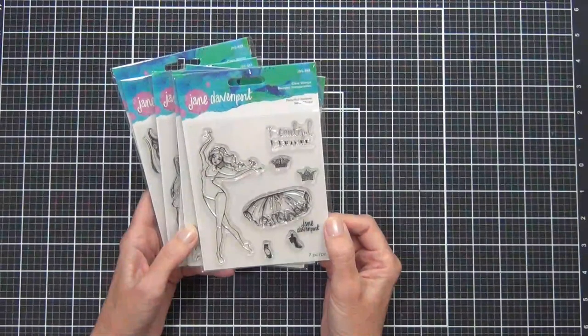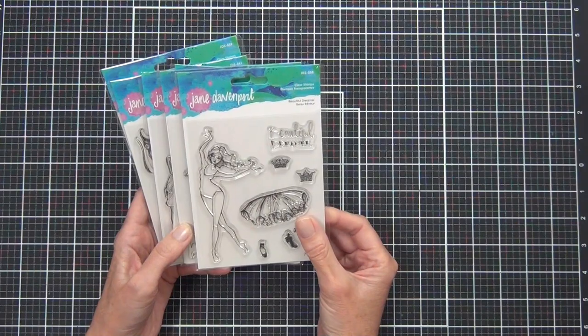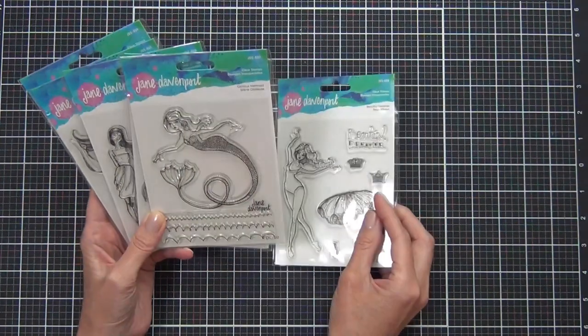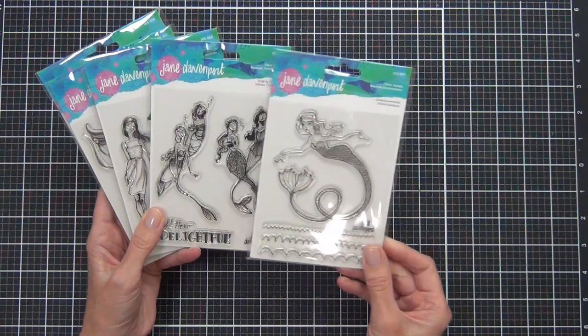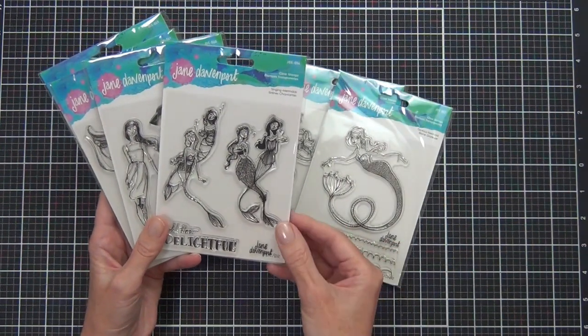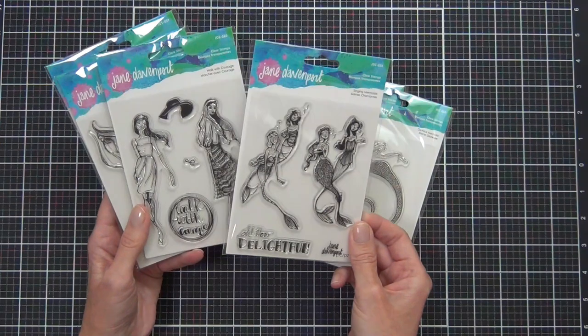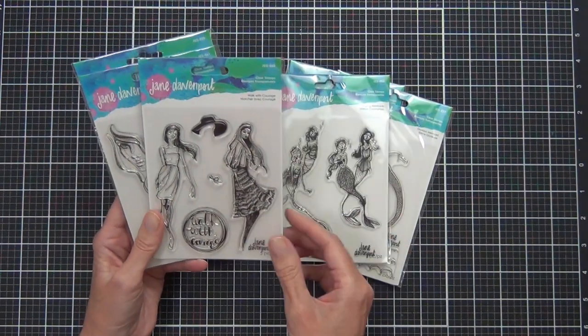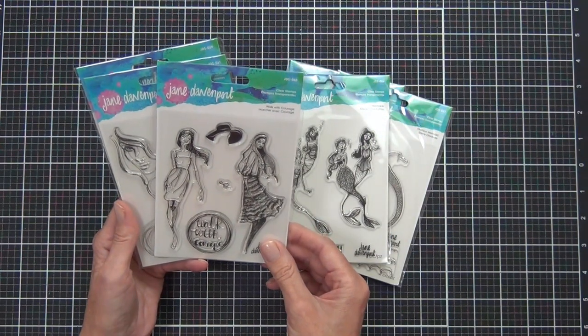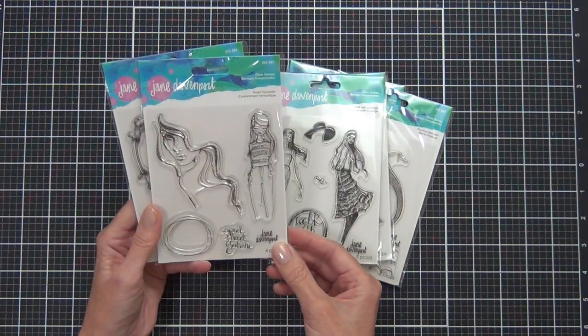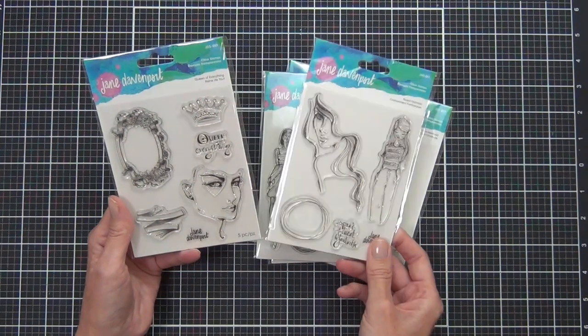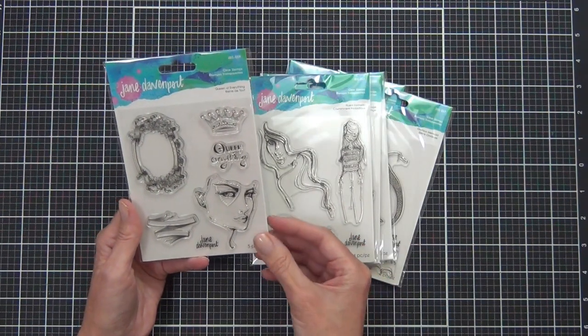Hi there, it's Therese from Lost in Paper. I'm so excited Spellbinders has sent me this set of stamps designed by Jane Davenport to share with you today. They're clear stamps and the main style of them are images of women and also some mermaid images. I've created two different styles of cards and I'm going to give you two examples of each today.